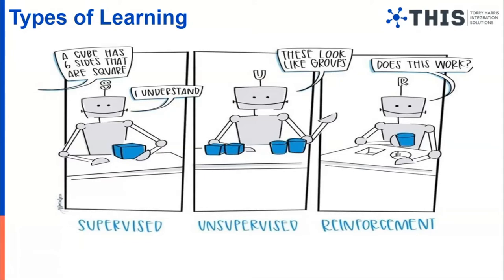Then what is reinforcement learning? Basically in reinforcement learning, the machine will try out all the possibilities and the goal of the machine will be to increase the amount of reward. The machine has a cylindrical object in its hand. Say the machine puts the object in the cubical slot — it will get a very low reward or maybe a penalty. Then the machine tries the other possibility: it picks up the object and puts it in the cylindrical slot and gets a very high reward. So the machine will understand that to maximize the reward, it has to put the cylindrical object in the cylindrical slot, and it will start repeating this behavior.